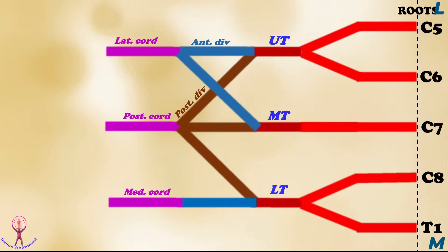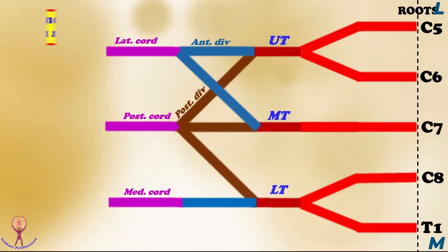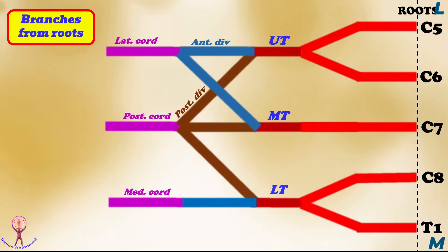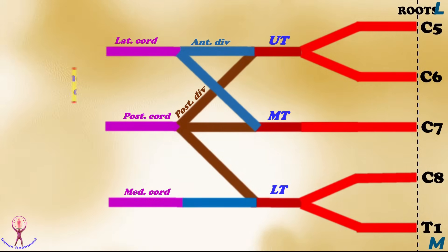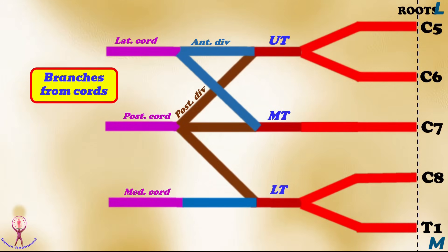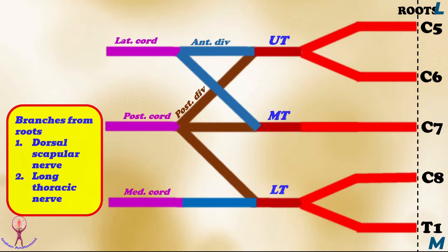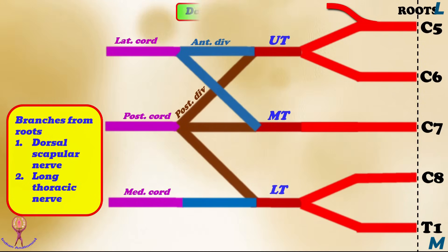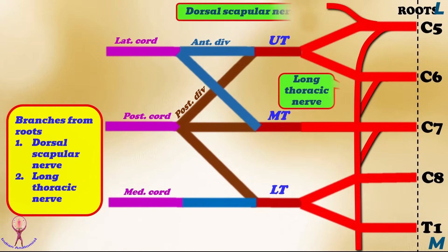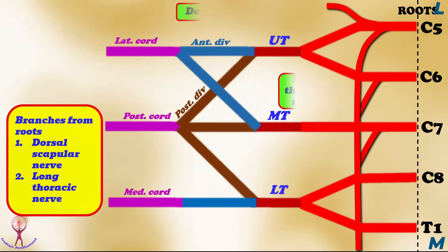Now, the branches of the brachial plexus are classified into branches from roots, branches from trunk, and branches from cords. From the roots: first, the dorsal scapular nerve arises from the lateral part of the C5 root, supplying the rhomboids and with a lesser supply to the latissimus dorsi muscle. Second, roots C5, C6, and C7 give the long thoracic nerve, which supplies the serratus anterior muscle.